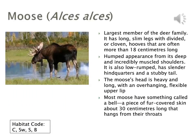Moose is the largest member of the deer family, with very large, long slim legs and cloven hooves more than 18 centimeters long. It has a very humped appearance from its deep and muscular shoulders, hindquarters, and a very stubby tail. The moose's head is extremely heavy with a long overhanging flexible upper lip. The moose also has something called a bell — a piece of fur that dangles from its throat.